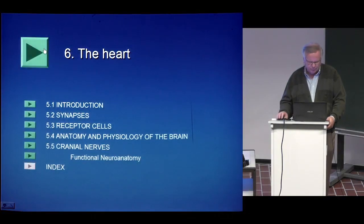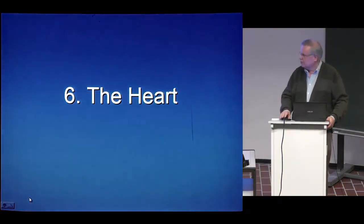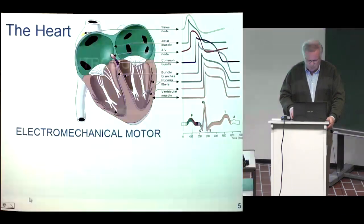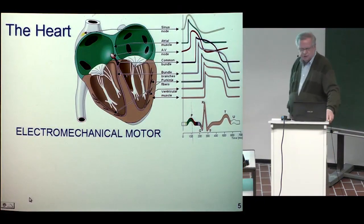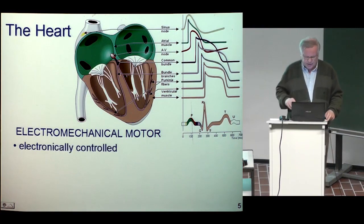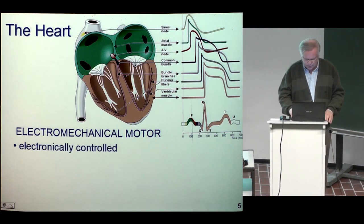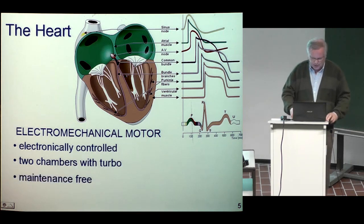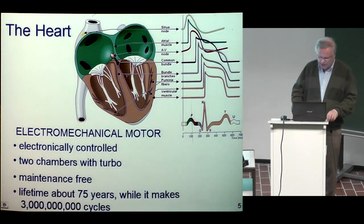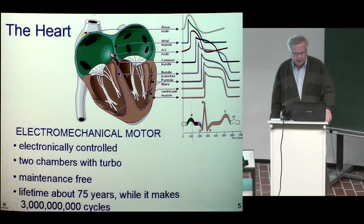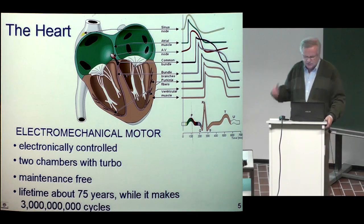Let's go to the heart. As I told you in the first lecture, the heart is an electromechanical motor — it is electronically controlled. It has two chambers acting as turbos. It is maintenance-free, and during a lifetime of about 75 years on average, it makes three billion cycles. It is a fantastic engine.